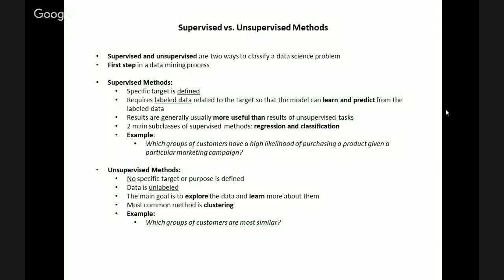A data science problem is considered supervised when a specific target is defined and the purpose is clear. Supervised methods require labeled data so that the model can learn and predict from such data. Labeled data is essentially data that has meaningful tags and can be put into classes. In data science, investing in data is a key component of the process, and such investment could be in the form of buying the data from external third parties or building in-house infrastructure that allows the company to start collecting the data internally. Both methods obviously incur costs for the company.